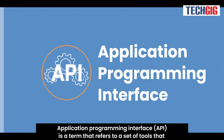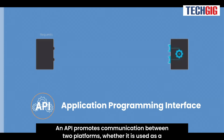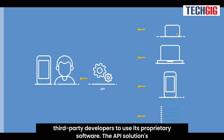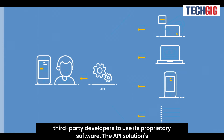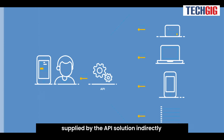Application Programming Interface, or API, promotes communication between two platforms, whether it is used as a standalone solution or as part of an SDK. This is accomplished by allowing third-party developers to use its proprietary software. API solutions allow developers to then let their own consumers use the service or services supplied by the API solution indirectly.